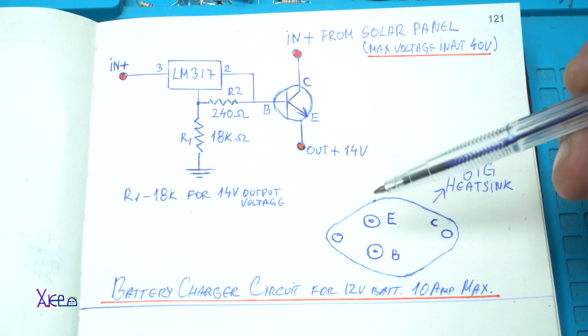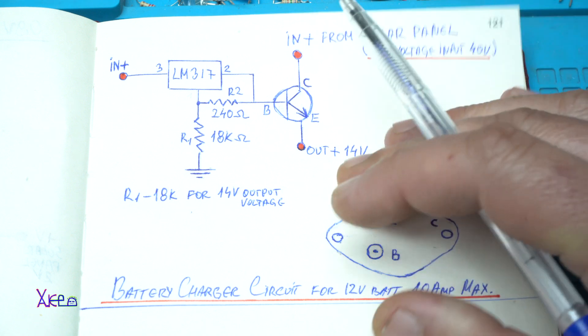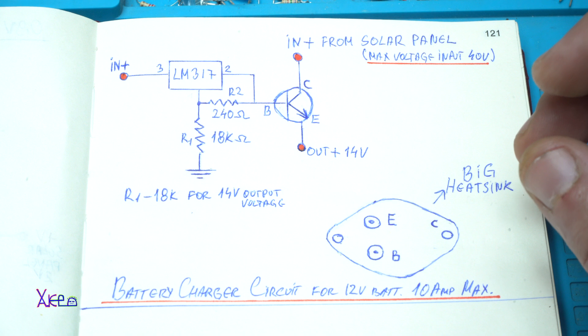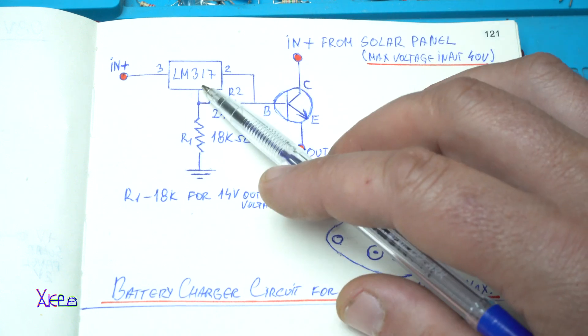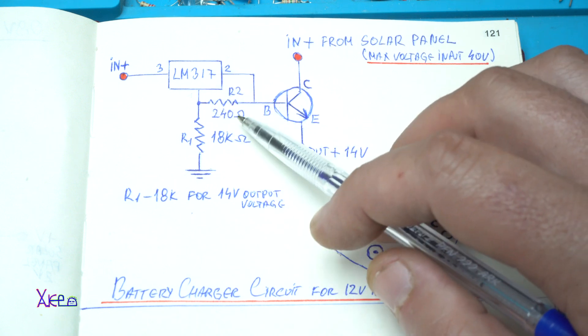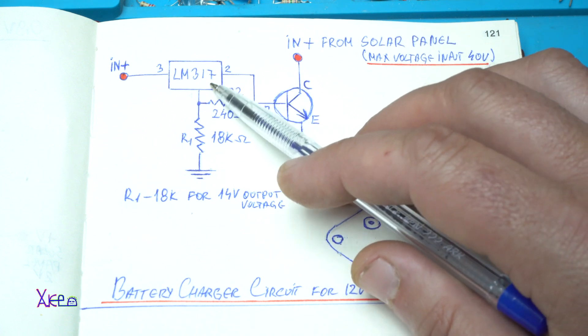And the main is of course this N-P-N 2N3055 transistor that can handle up to 70 volts and 15 amperes maximum. And also you will need an LM317 voltage regulator, and a 240 ohm resistor that is for the current for the regulator.